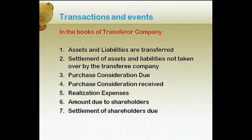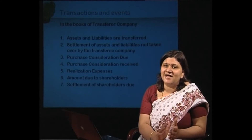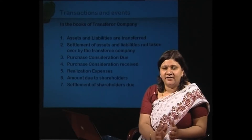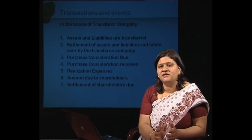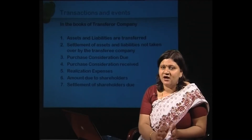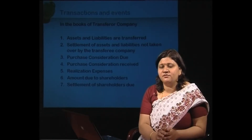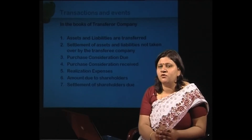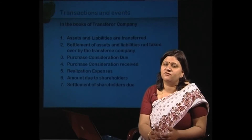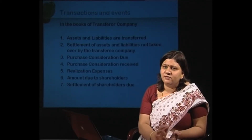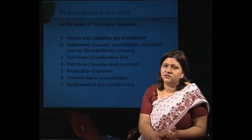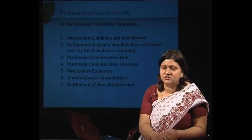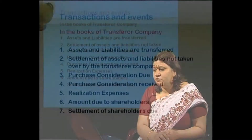In today's lecture we shall highlight the transactions and events which occur when two or more companies amalgamate. Both parties to the contract — the transferor and transferee — have to record these transactions in their books of accounts. The transferor company is the one who is selling or transferring assets and liabilities, while the transferee is the company which will hold all the assets and liabilities after amalgamation.